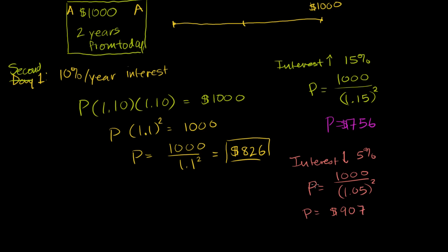So you see mathematically, when interest rates went up, the price of the bond went from $826 to $756. The price went down. When interest rates went down, the price went up. I think it makes sense. The more you expect, the higher return you expect, the less you're willing to pay for that bond. Anyway, hopefully you found that helpful.